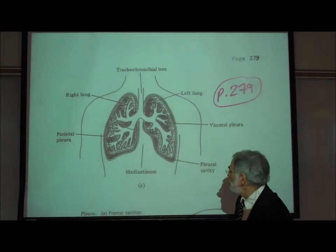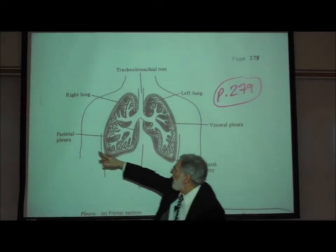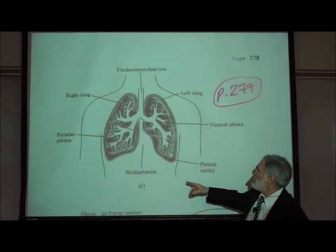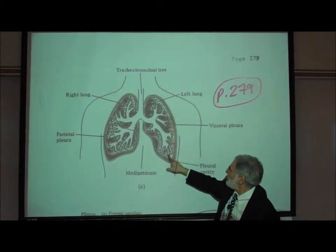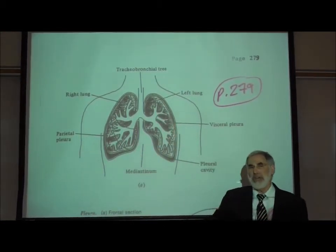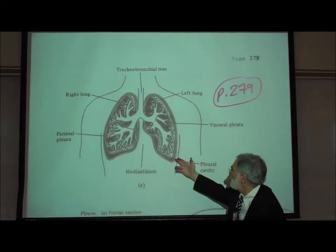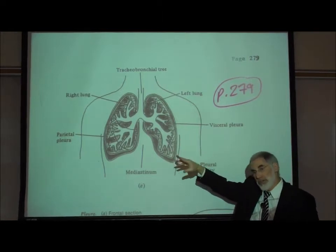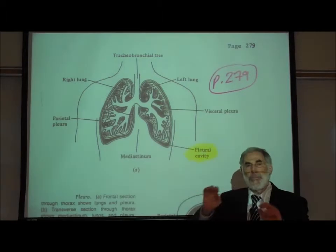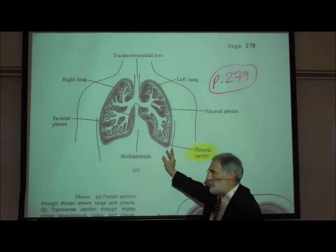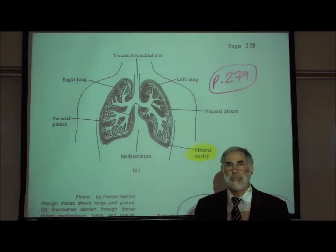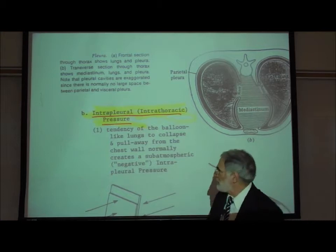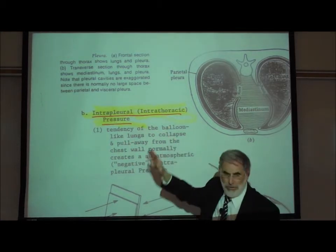On page 279 we can see the parietal pleural membrane attached to the inside chest wall, and the visceral pleural membrane attached to the outer surface of the lung. They both secrete a slippery serous fluid that fills up a thin space between these two membranes. That thin space filled with fluid is called the pleural cavity. The pressure inside this pleural cavity is referred to as the intrapleural pressure or intrathoracic pressure.